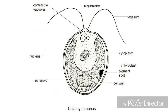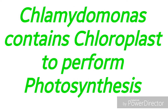Like amoeba, Chlamydomonas is also unicellular, but one fundamental difference is that Chlamydomonas is a photosynthetic organism — it can prepare its own food. In the case of amoeba, it is non-photosynthetic and has to obtain food from water.